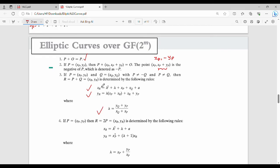In the fourth case when P = Q, the formulas for λ, xᵣ, and yᵣ are specific to GF(2^m). These are the key formulas for elliptic curves over GF(2^m).